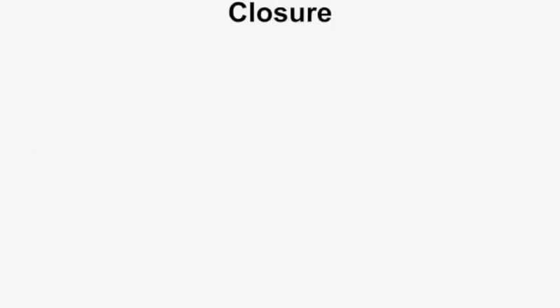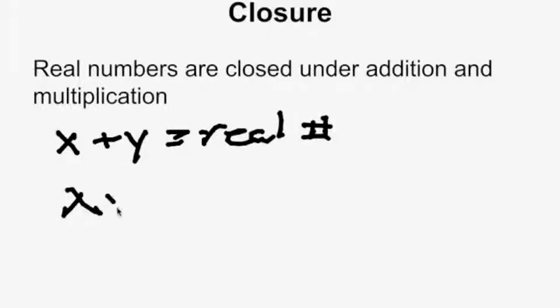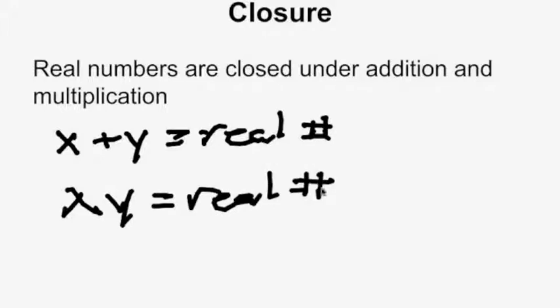The first one is called closure. Closure states that the domain of real numbers is closed under addition and multiplication. What that means is that as long as x and y are real, x plus y will equal a real number, and x times y will equal a real number. You can't add two real numbers and get an imaginary number.